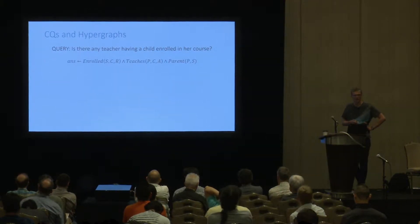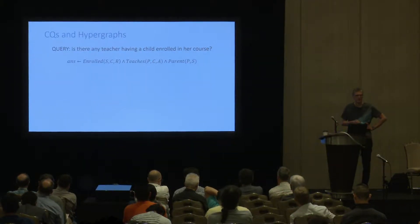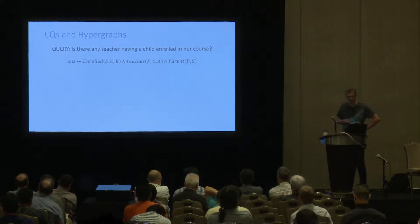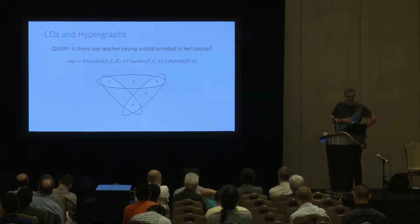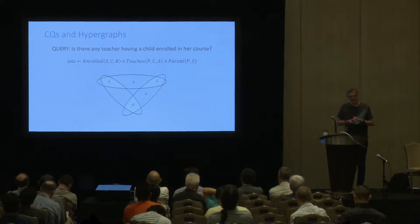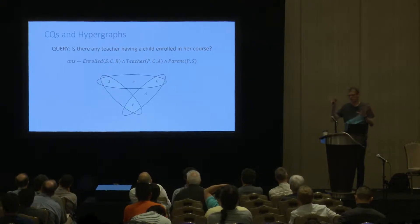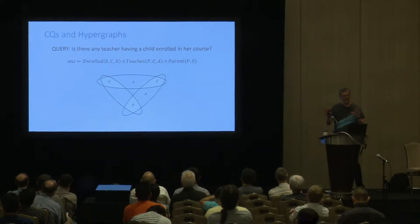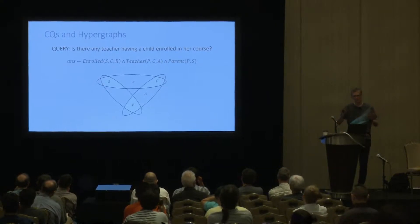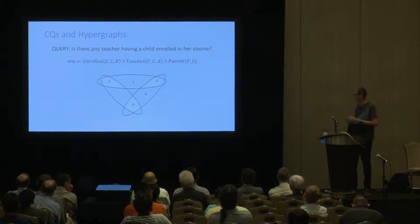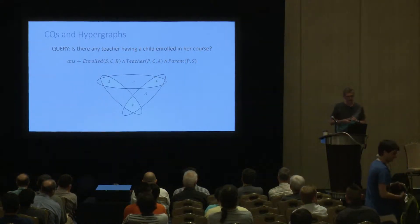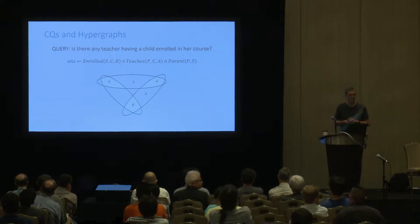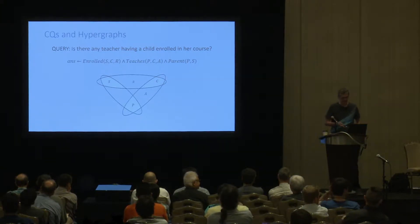Let's look at a simple conjunctive query which asks for teachers who have a child enrolled in a course taught by them. In the hypergraph corresponding to a conjunctive query, the vertices correspond to the variables of the query and the edges correspond to the atoms of the query. So here we have a query with five attributes and three atoms; correspondingly we have a hypergraph with five vertices and three edges.